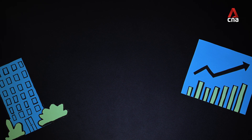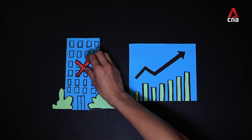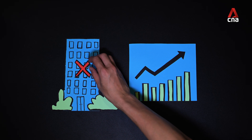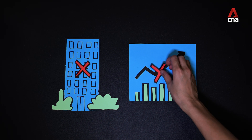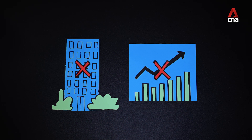Looking at income per person helps us account for differences in household sizes, because a bigger household needs more money than a smaller one. This scale gives us a more accurate picture when measuring nationwide inequality. It's worth noting that our Gini coefficient doesn't take into account money people make from things like rent from a second property or stocks.